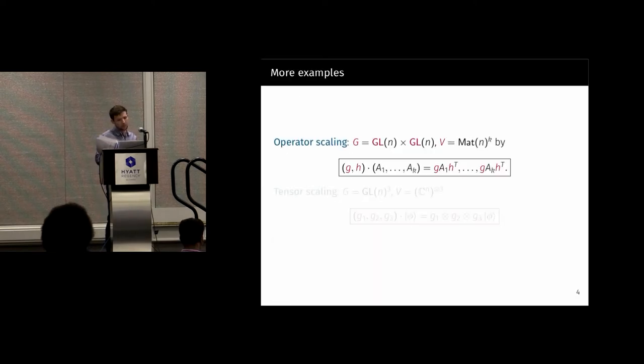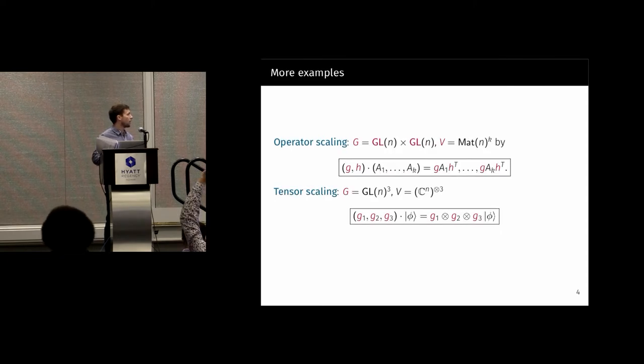Some other examples: this action comes up in operator scaling. If you have a tuple, you can act on the space of tuples of matrices by pre and post multiplying them. And you need that transpose to make it a group action. Similarly, there's a group action on tensors by acting on each tensor factor. Triples of matrices act on three tensors by acting on each tensor factor.